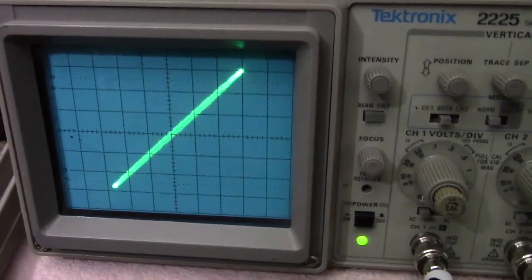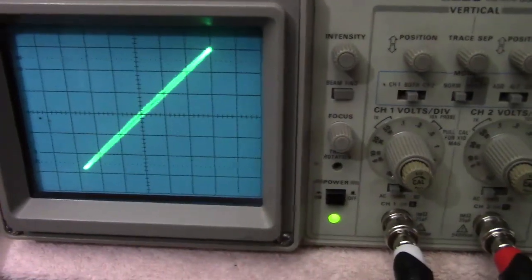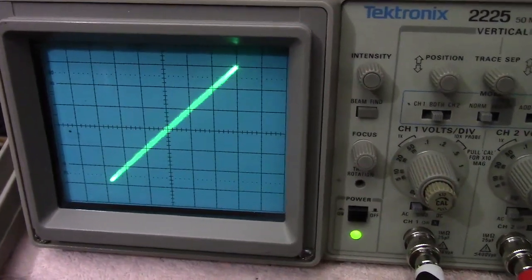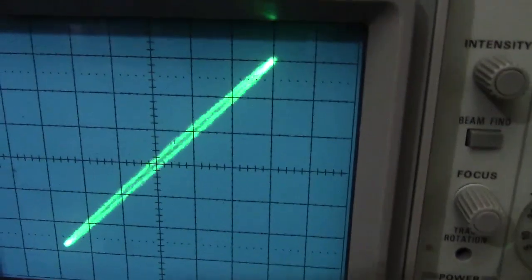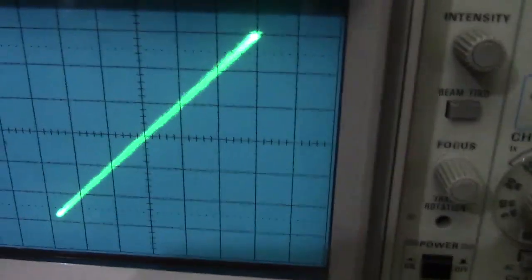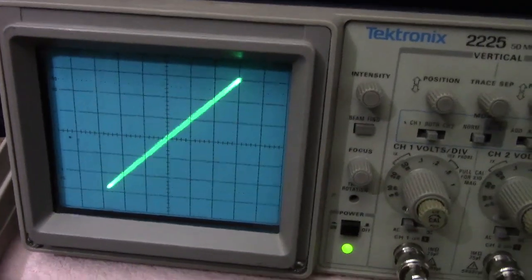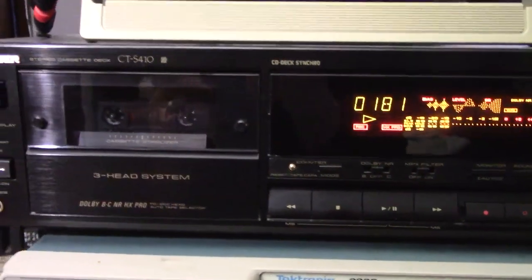I'm going to take this tape that I'm recording right now and the signal on it and run it through the scope again but through a different cassette deck and we're going to adjust the azimuth of the head to make sure that it looks just like this. You see it's very straight and it's got some little bumpy things on it but that's due to the imperfections in the tape surface and such.